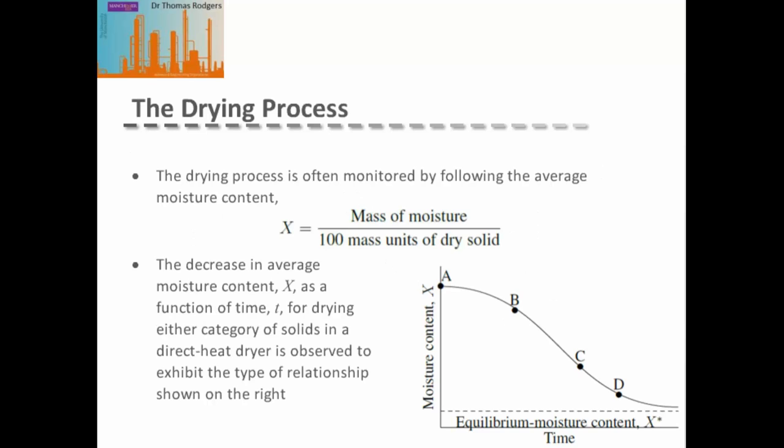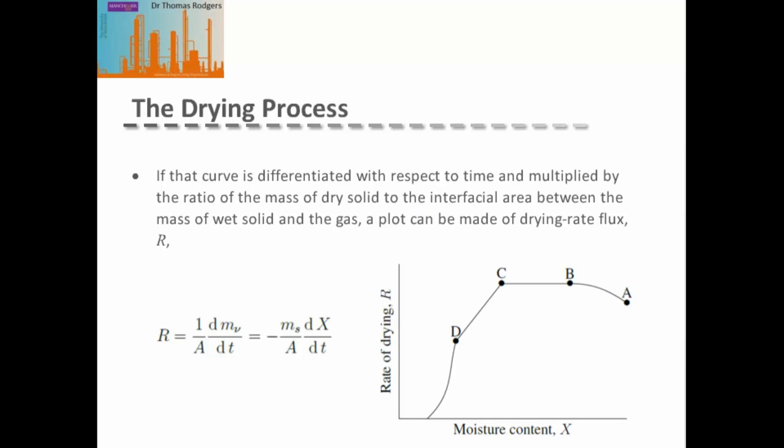When monitoring drying, it is common to use the average moisture content, given as mass of moisture per 100 mass units of dry solid. As drying proceeds, there is a decrease in average moisture content regardless of the solid classification used. Differentiating the moisture content versus time curve with respect to time gives a curve representing the drying rate against moisture content. The drying rate is that differential multiplied by the mass of dry solid over the interfacial area between wet solid and gas.